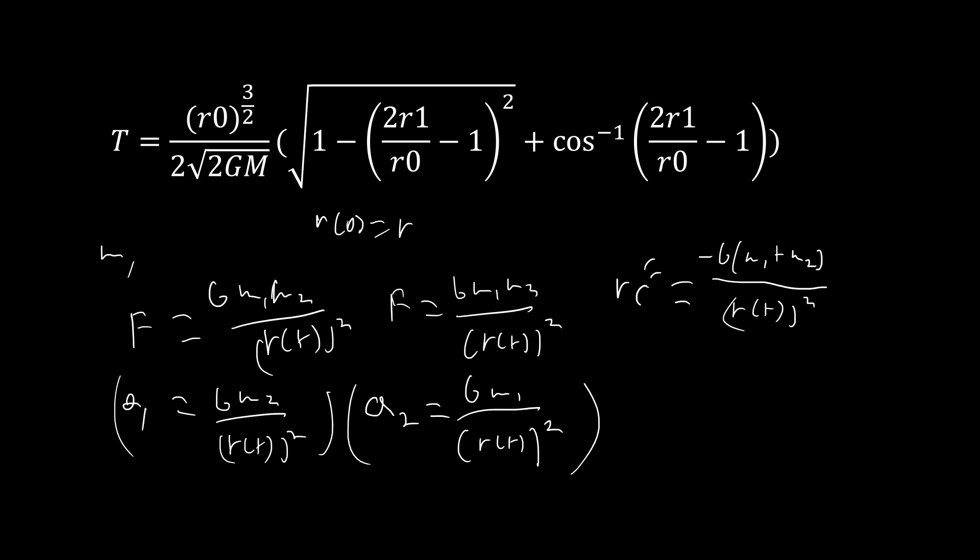So this is actually very similar to our original problem which resulted from the differential equation y double prime equals negative G m over y squared, and you can see it's almost the exact same thing.